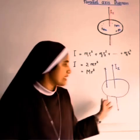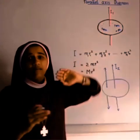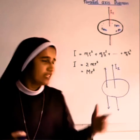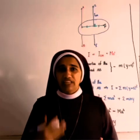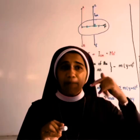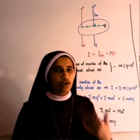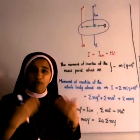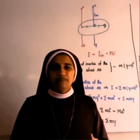To avoid this lengthy procedure whenever we change the axis of rotation, the parallel axis theorem helps us. The parallel axis theorem states that the moment of inertia of a rigid body about any axis is equal to the sum of its moment of inertia about a parallel axis passing through its center of mass and the product of the mass of the body and the square of the distance between the two axes. Mathematically: I = Icm + Ma².